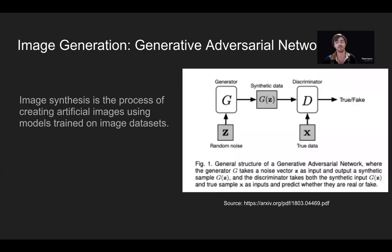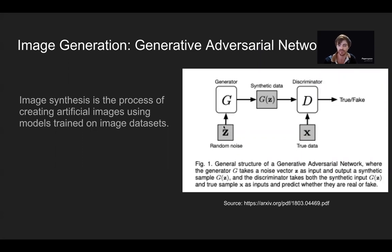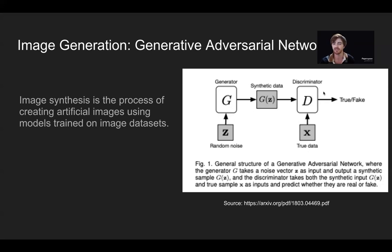So let's talk about GANs. If you're not familiar with the topic, image synthesis is the process of creating artificial images using models trained on image data sets. One of the most powerful tools for image generation is the generative adversarial network, or GAN. A GAN works by taking some input of random noise into a generator, which transforms that random noise into synthetic data G of Z. This synthetic data is an input to a discriminator, which compares it with a sample of true data to determine how likely that synthetic data is to be perceived as true or false. That assessment is then passed back to the generator so it can iteratively improve on the synthetic data it is creating.